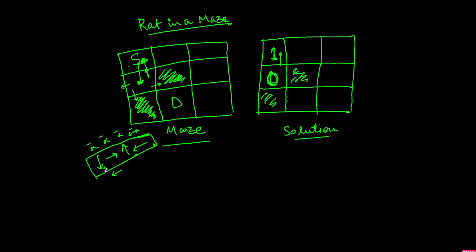When all four moves are not possible, the rat backtracks. From this cell, the rat has already tried going down and it didn't work, so the next move is going right. The rat goes right, marks that cell as one. From this cell, it tries to go down but that cell is blocked, so it goes right again, marks that cell as one, and then starts with the downward direction.